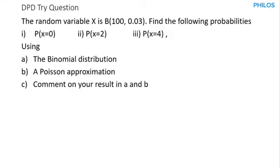Hi, welcome. Let's take this discrete probability distribution question and see how to solve it. The question says the random variable x is B, which means that the random variable x follows a binomial probability distribution. The B represents binomial probability distribution.